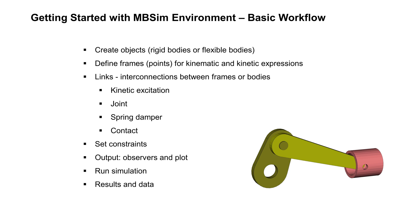First we need objects — bodies for simulation. You can create simple visualization objects directly with MbSim: cube, sphere, cylinder, or you can import from CAD. The points are frames for kinematic and kinetic expressions. Sometimes you should create joints first before bodies. After that we need interconnections between frames and bodies: links, kinetic excitation, joints, spring damper, or contact.